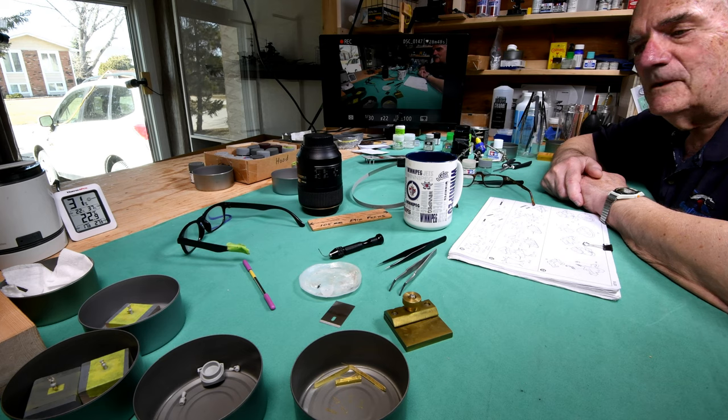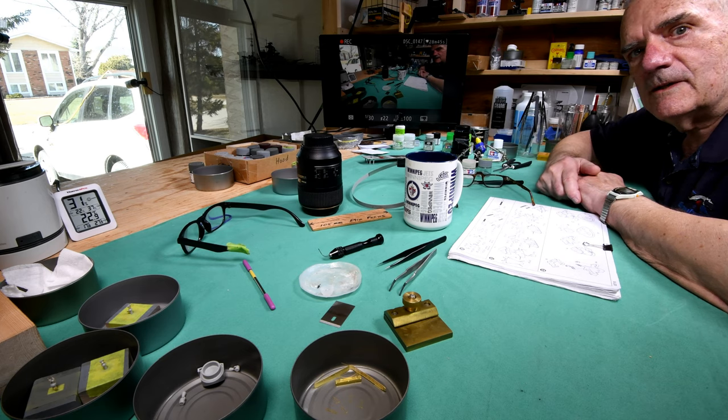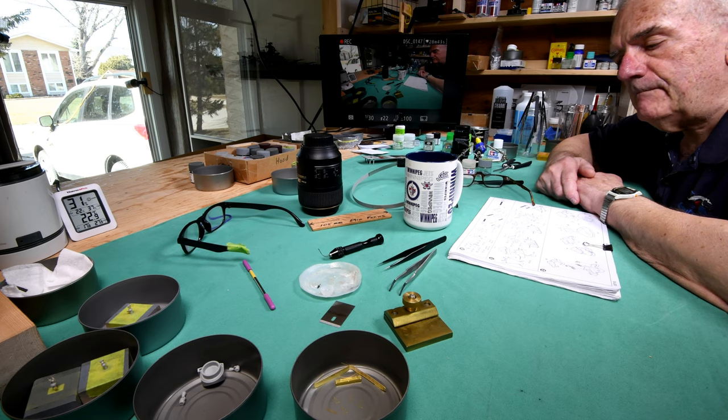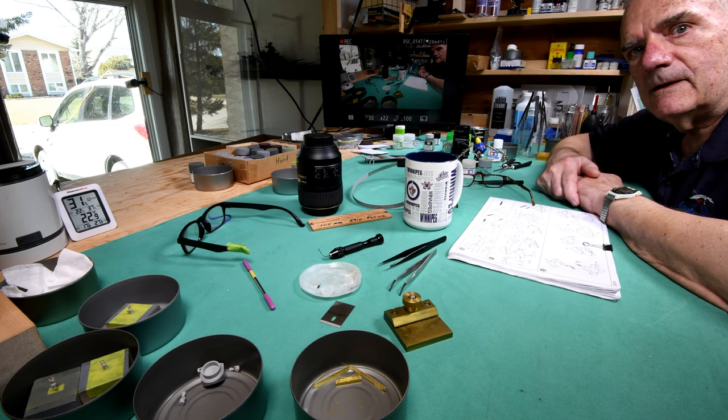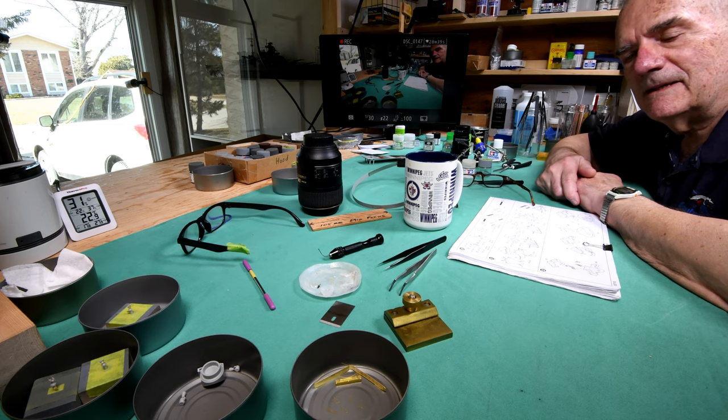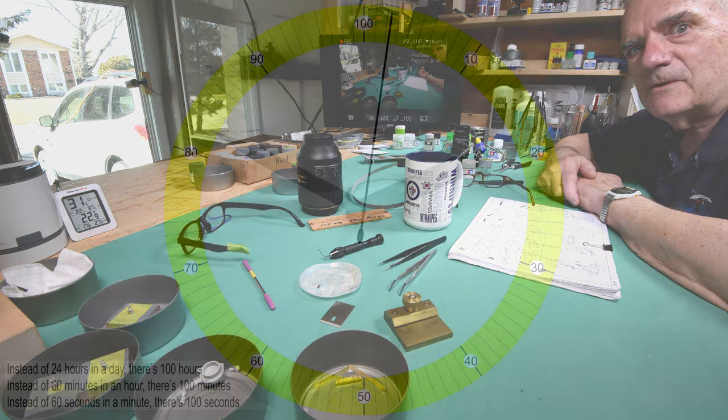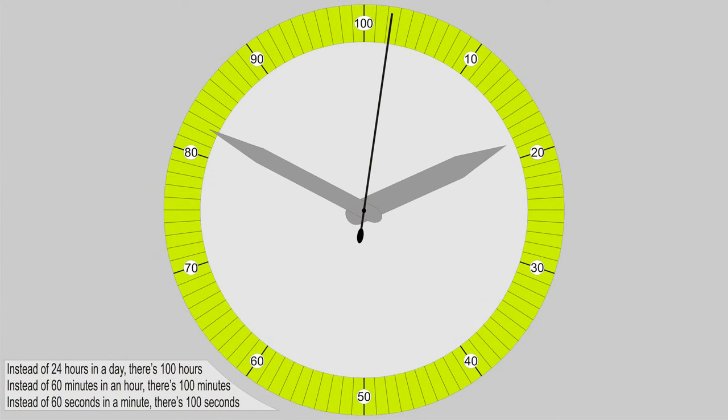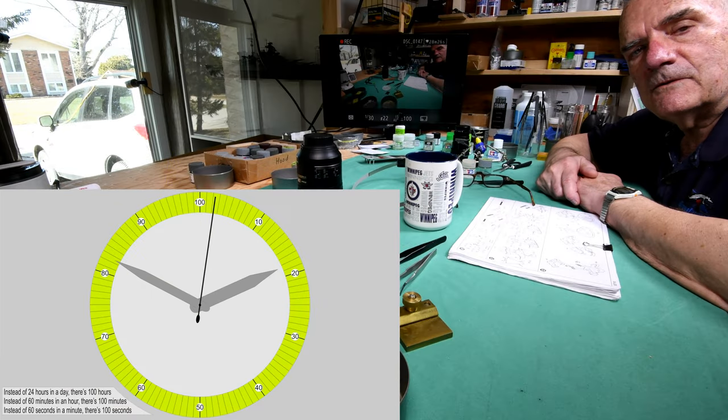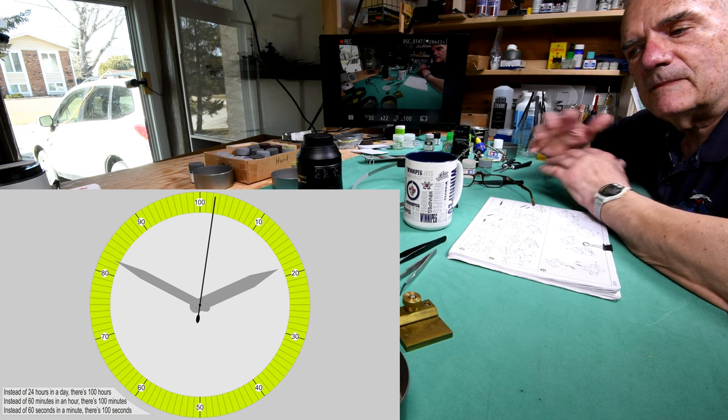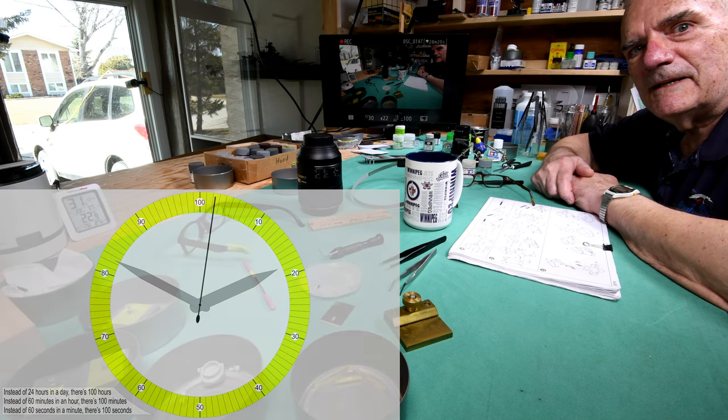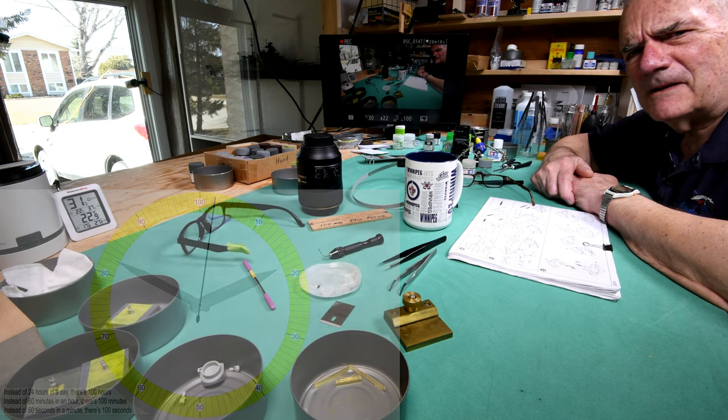Yeah, the only way that you could implement something like digital time, where you have a 100-hour day clock or 100 hours per day, a clock like I'm showing you here on the screen, would be as if you'd have to vote me in as dictator of the world. And then maybe it would happen. And that's not going to happen.